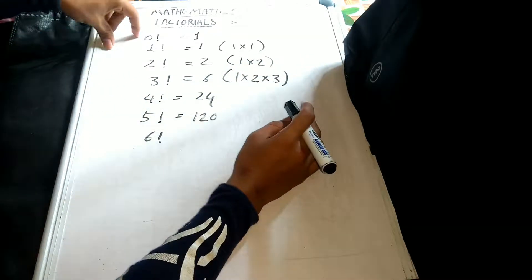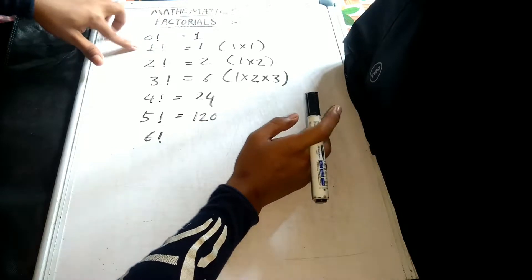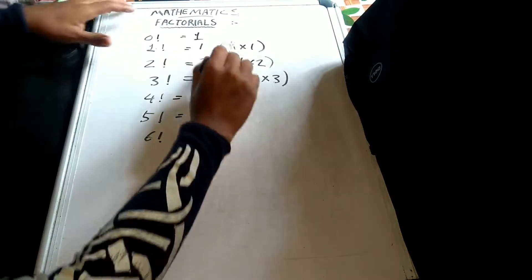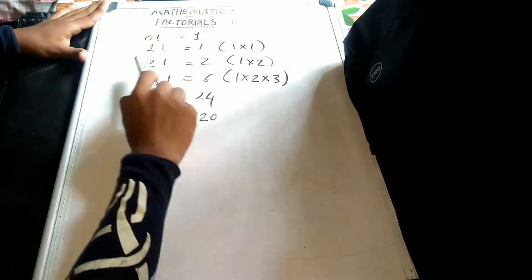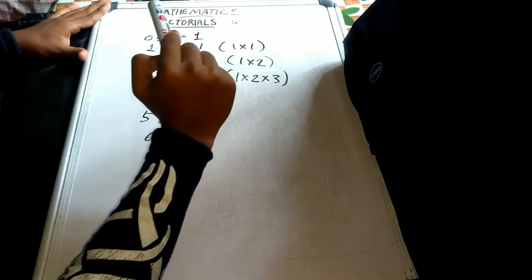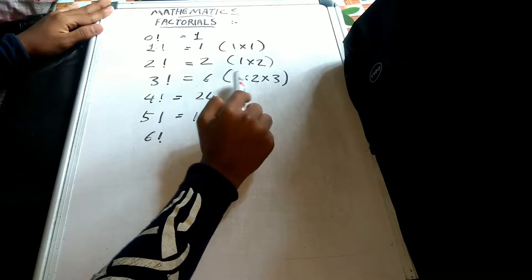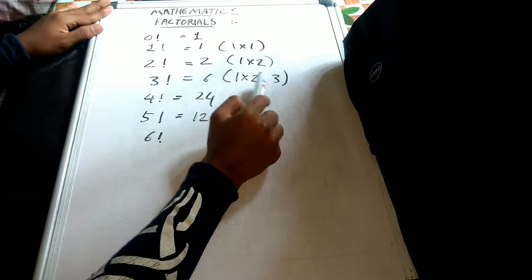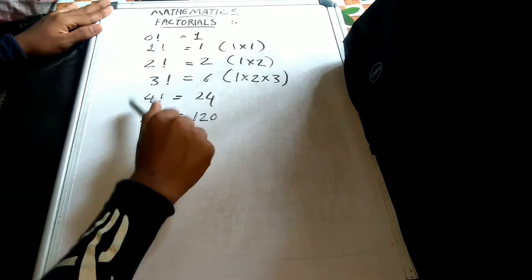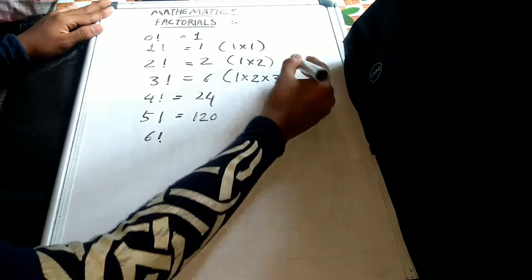0 factorial is 1. Then 1 factorial is 1, 2 factorial is 1 into 2, 3 factorial is 6 — that is 1 into 2 into 3. Then 4 factorial is 1 into 2 into 3 into 4.